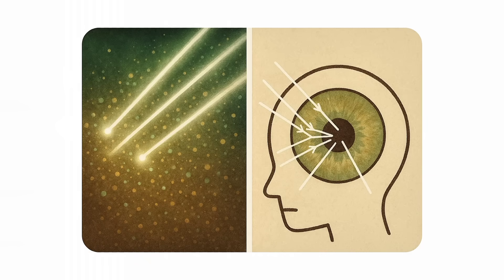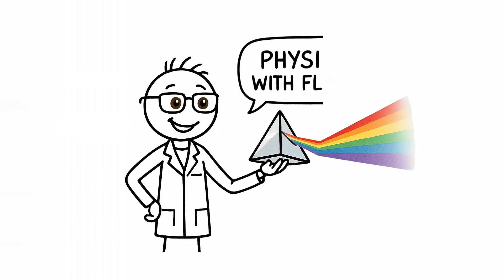Hazel eyes look green in sunlight, golden indoors. This happens because of how light scatters off different pigments in the iris. It's not mood magic. It's physics with flair.